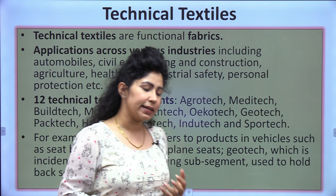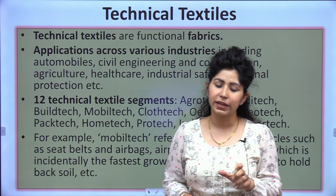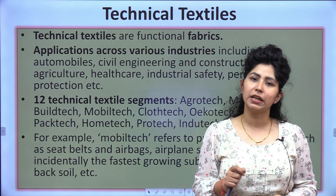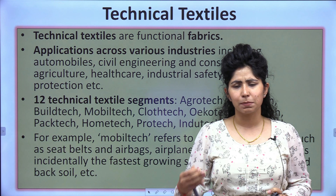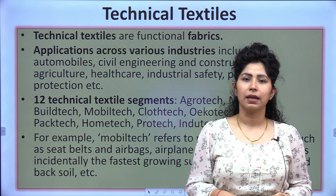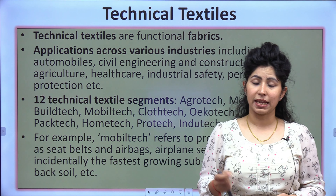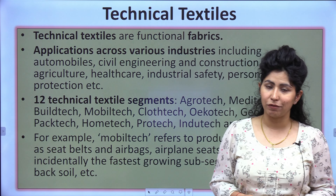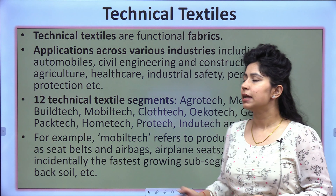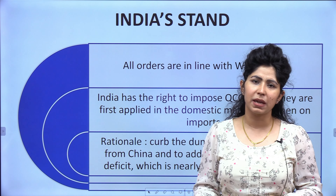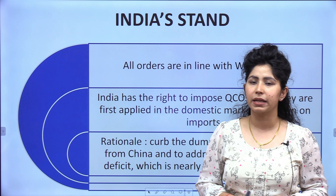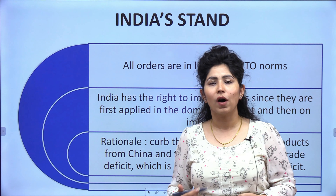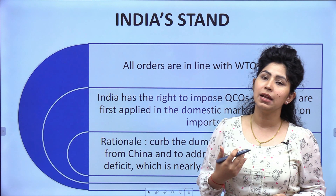Now before we move to technical textiles, we need to know a downside of quality control orders. Many people depend on cheap raw materials to make textiles or fabrics and sell them at affordable prices. If those cheap raw materials are no longer available, the livelihoods of many people and our economy could suffer. This is why quality control orders are so heavily debated in the news — there is a lot of discussion about their impact on different sections of society and on manufacturers.